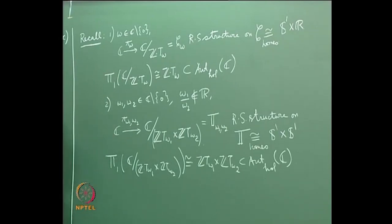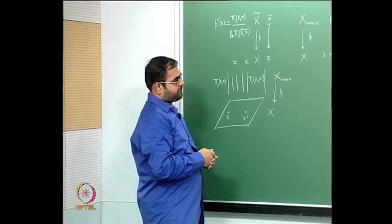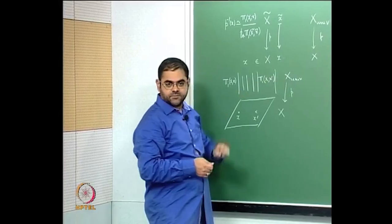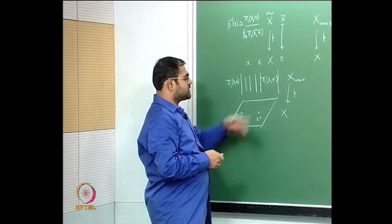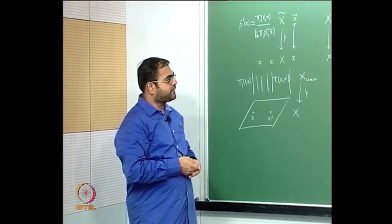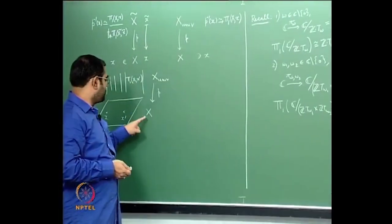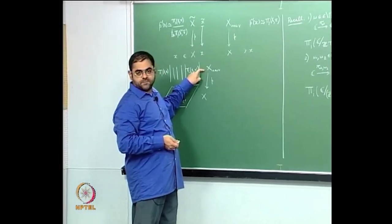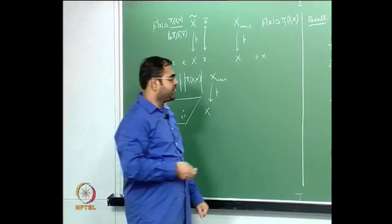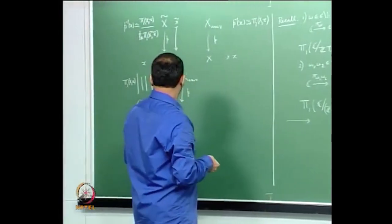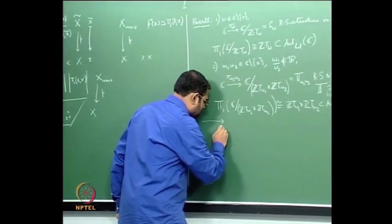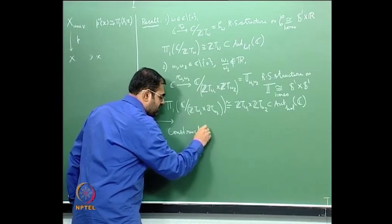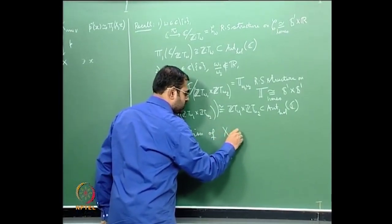So why does this happen? We need to understand this. The way to do that — at least one way — is first to tell you how one can construct the universal covering space. This argument will also help us construct the universal covering space and eventually explain why the fundamental group of the base space can be nicely identified as a subgroup of automorphisms of the universal covering space.